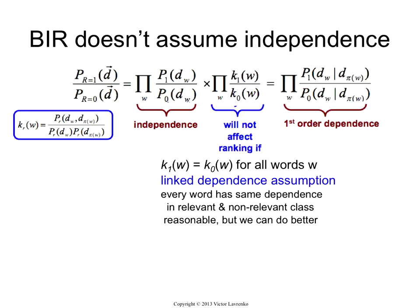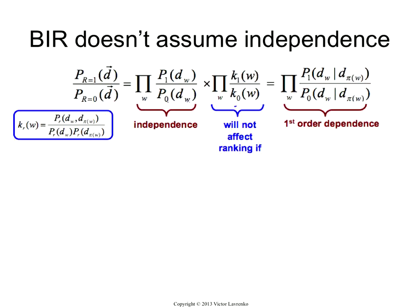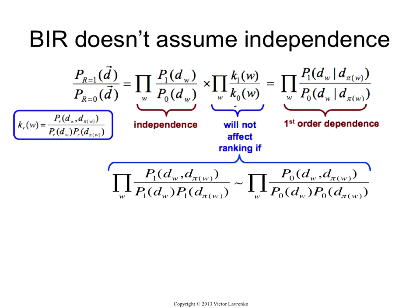This means we don't have to assume independence; we have to assume that the dependence is the same in the relevant class and in the non-relevant class. That's known as the linked dependence assumption. But it turns out you can actually do better than this. Here we were looking at a single word and saying, does that word have the same dependence in the relevant class and in the non-relevant class? In fact, we don't actually need to assume it for a single word. All we need is to make sure that the product of the Ks over all the words in the vocabulary is the same for K1 and K0.